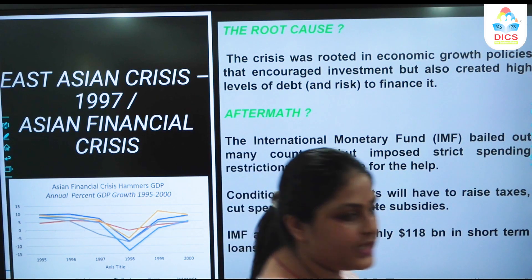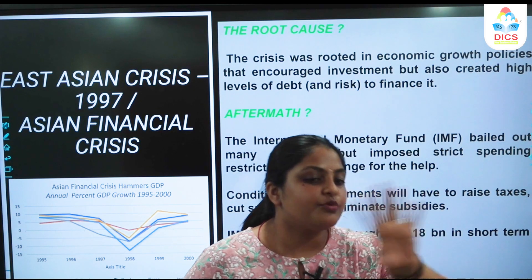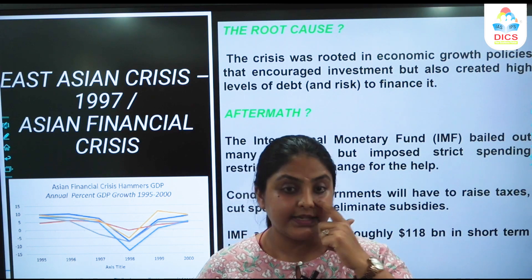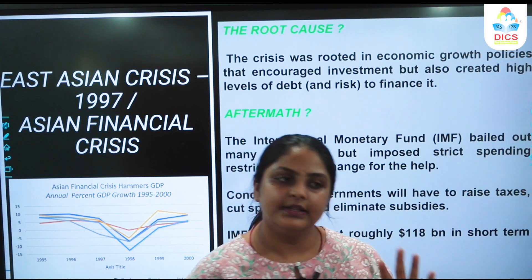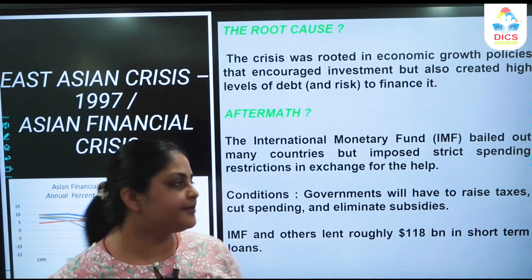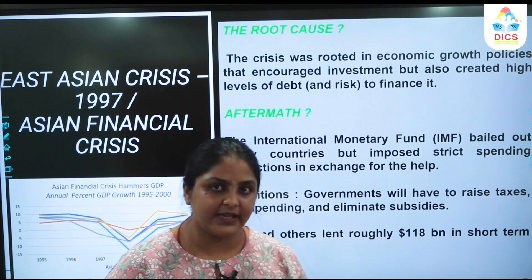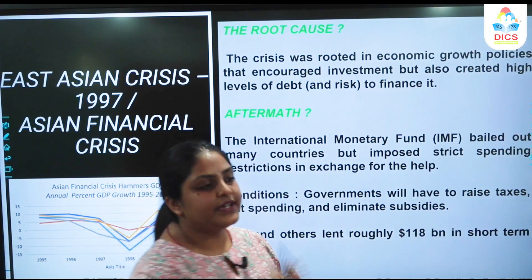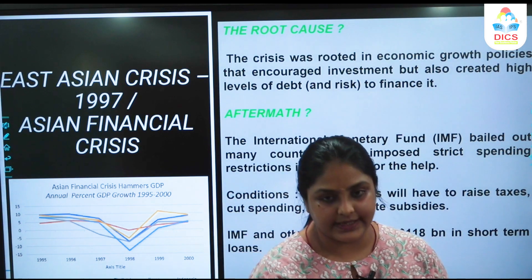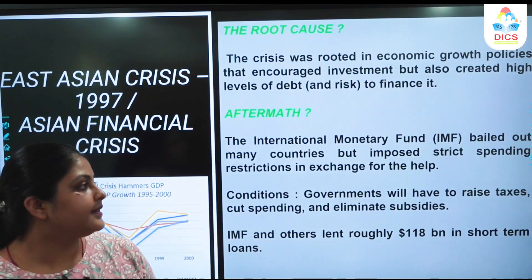IMF said: we will bail you out, we will give you money, but in exchange you will have to promise three things. Recalling what started the problem — government spending too much, taxes too low, and subsidies too high — IMF said exactly that: governments will have to raise taxes, cut spending, and eliminate subsidies. Those three root causes were made into conditions. IMF restricted those very root causes as conditions for the bail-out: we will give you short-term loans and help you financially, but you must follow these conditions.